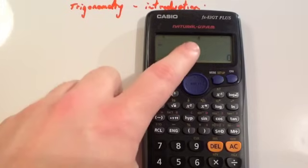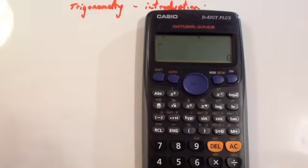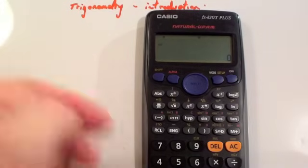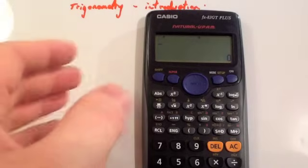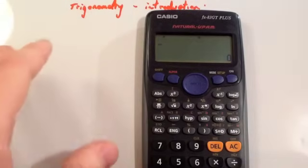As you'll notice, it has now changed to D at the top of your calculator, which means you're in degrees mode, and that means you can do these questions correctly. If you had an R at the top of your calculator for GCSE Maths, you're probably going to get the wrong answers.